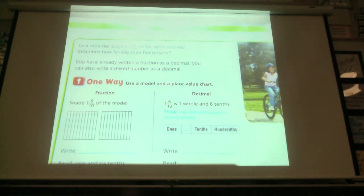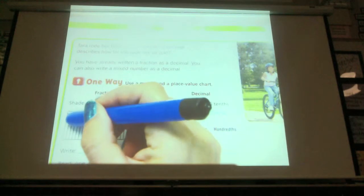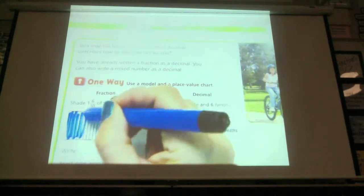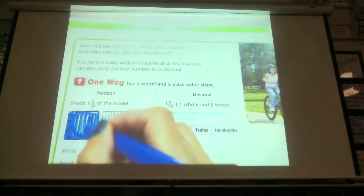Tara rode her bicycle 1 and 6 tenths mile. What decimal describes how far she rode her bike? You have already written a fraction as a decimal, and you can also write a mixed number as a decimal. Okay, so having 1 and 6 tenths, we can shade 1 whole 1, which would be this whole thing. It would look like that.